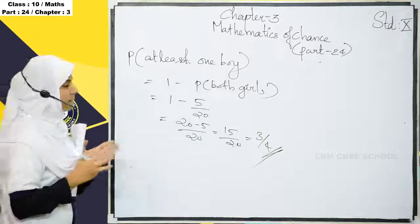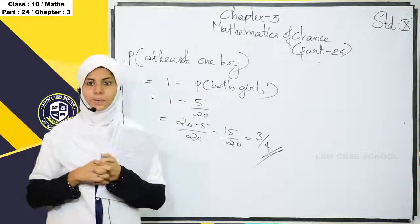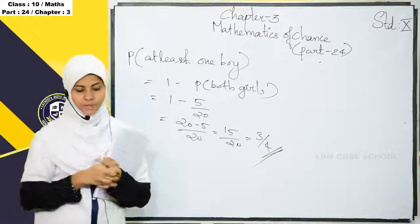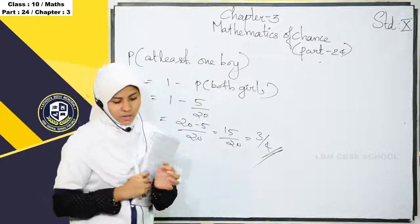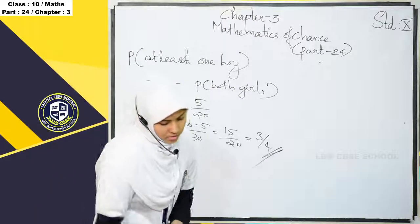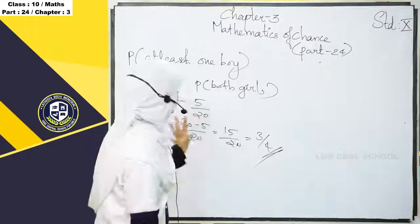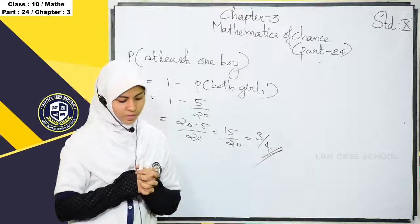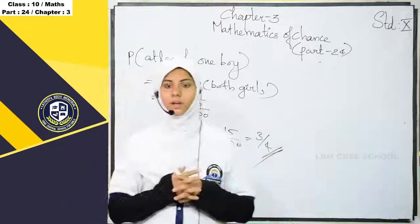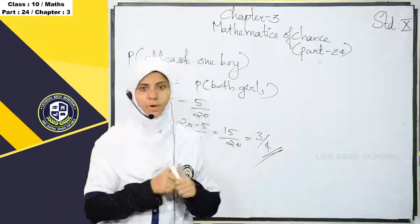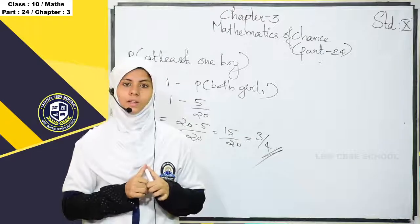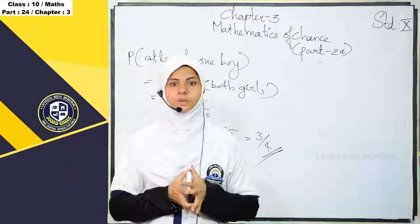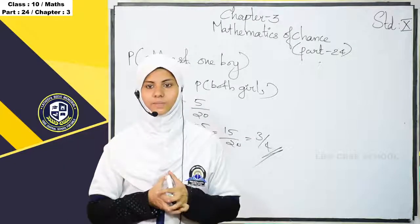So P(at least one boy) = 3/4. This is based on the More Pairs topic. We have 3 more problems based on More Pairs which we can do in the next class. Today's class ends here. Assalamu alaikum.